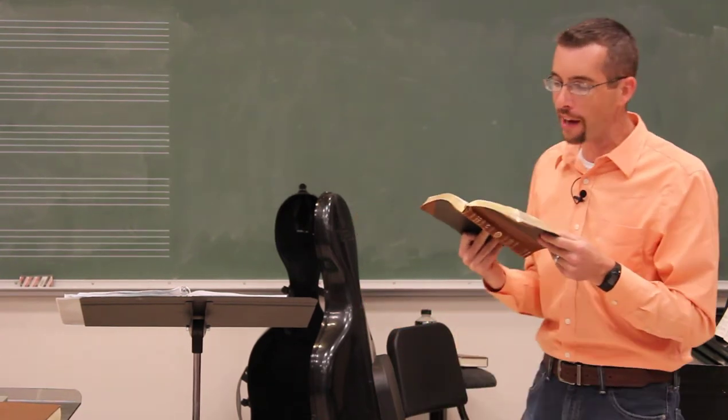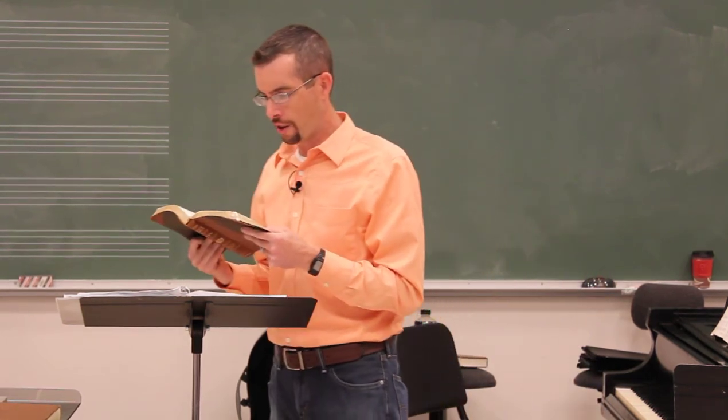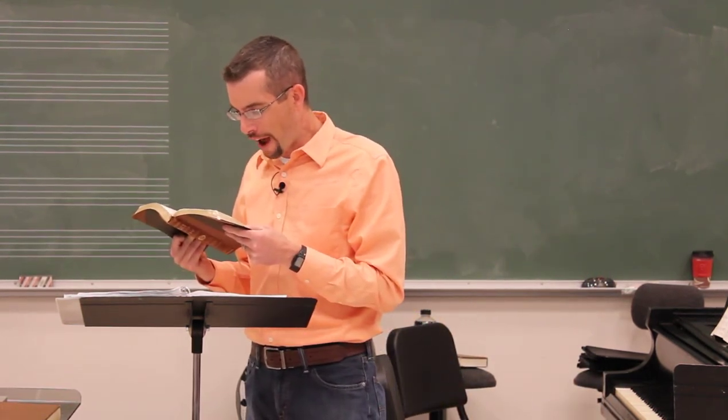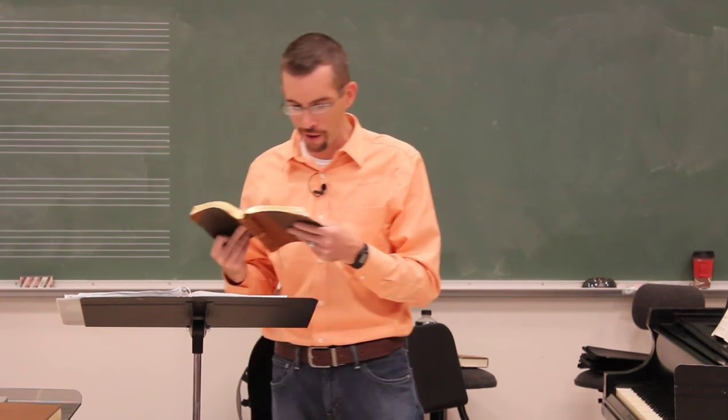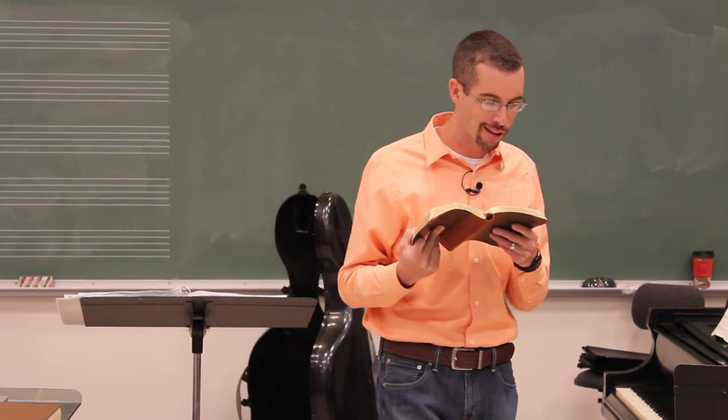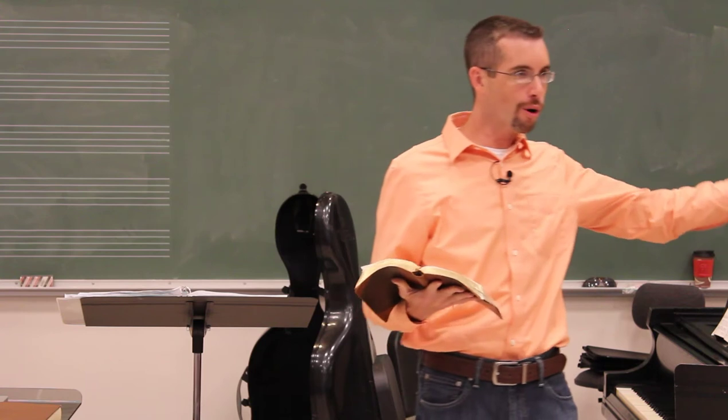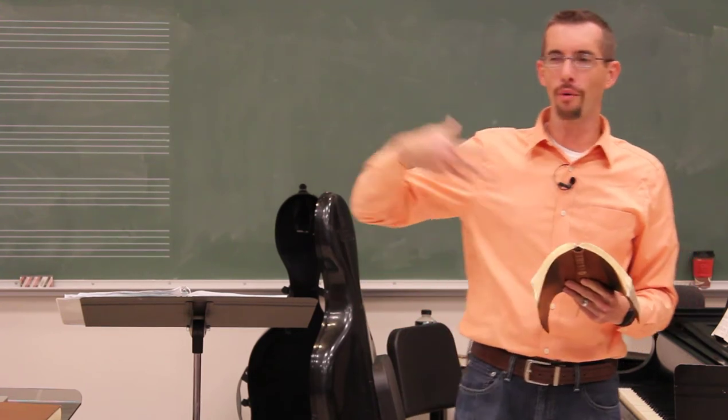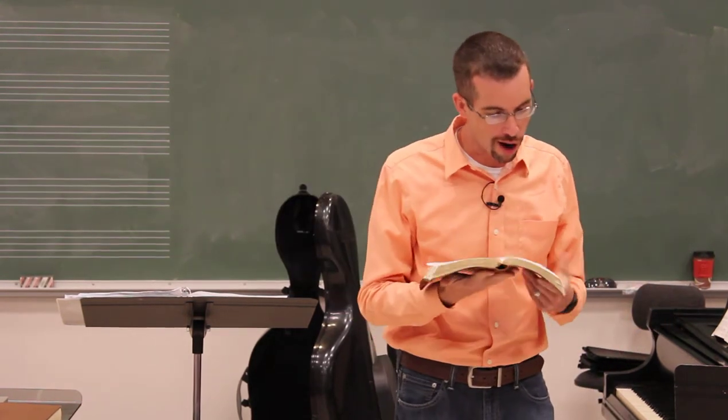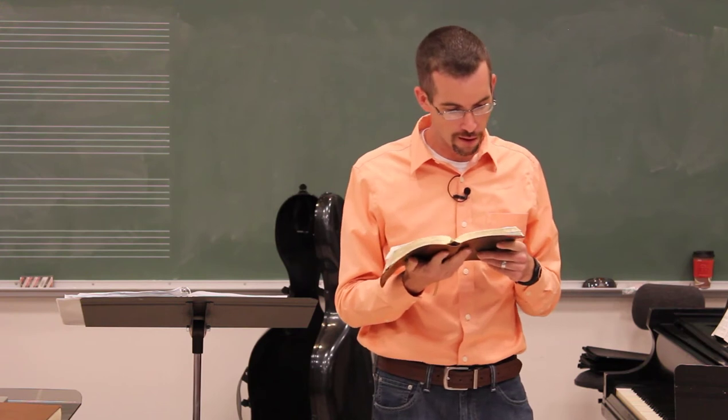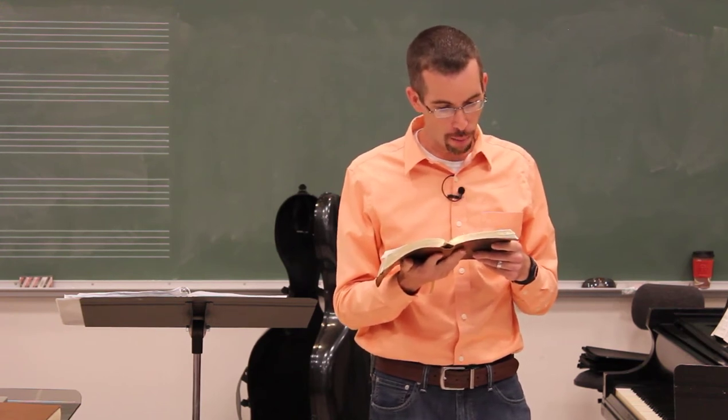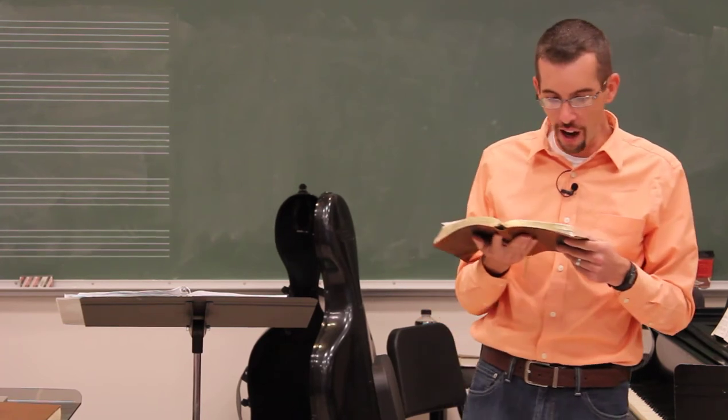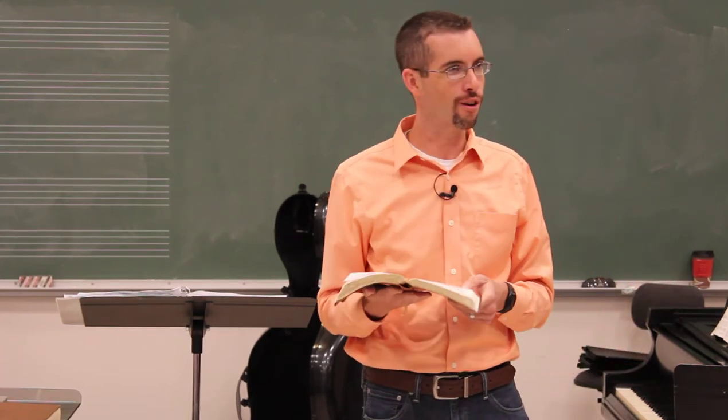He says, They have good health. They're not in trouble, verse 5, like others are. They're not stricken like the rest of mankind. Therefore, pride is their necklace. And violence covers them as a garment. Their eyes swell out through fatness. Their hearts overflow with follies. They scoff and speak with malice. Remember we talked about words yesterday? He says, These people don't regard God in their words. They talk with malice, with evil. Loftily, they threaten oppression. They set their mouths against the heavens. And their tongue struts through the earth.